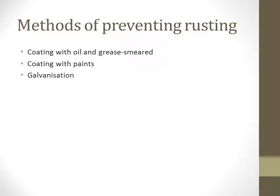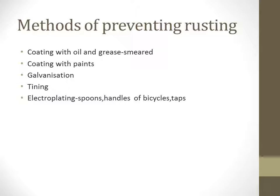Galvanization is also a process of preventing rusting. Galvanization is a coating of zinc applied to iron sheets. Tining is a coating of tin applied to various materials such as cooking utensils, so that rusting is prevented. Electroplating is a coating process that takes place with the help of electric current. Examples include spoons, handles of bicycles, and taps, which are all coated using electroplating.